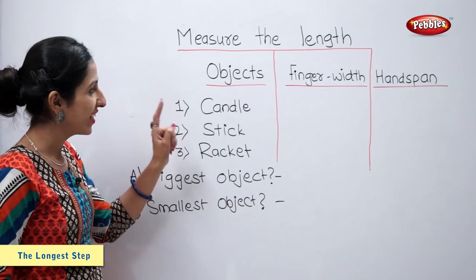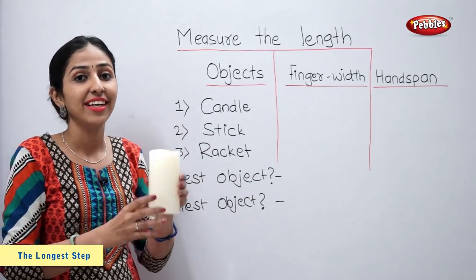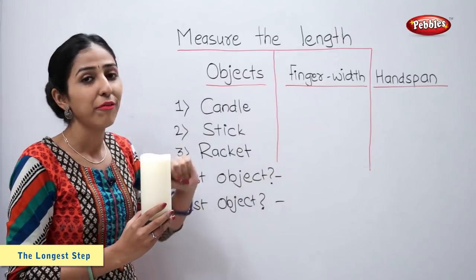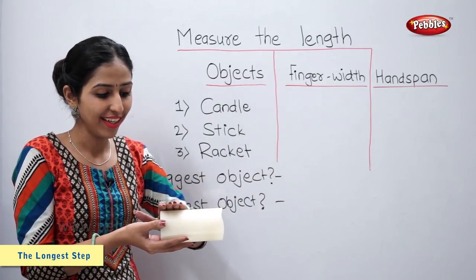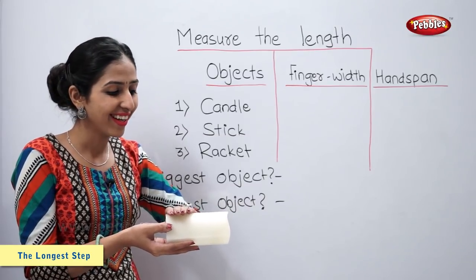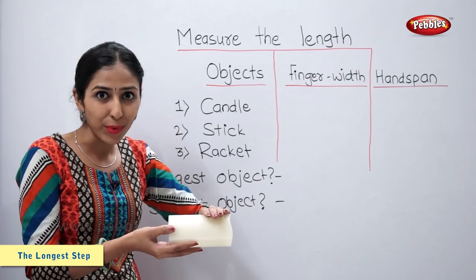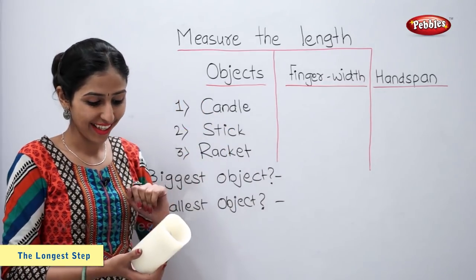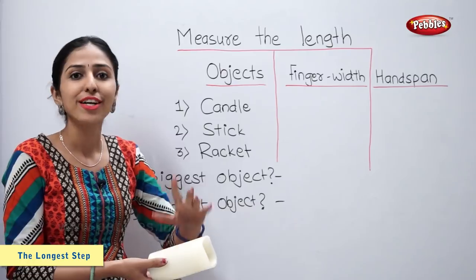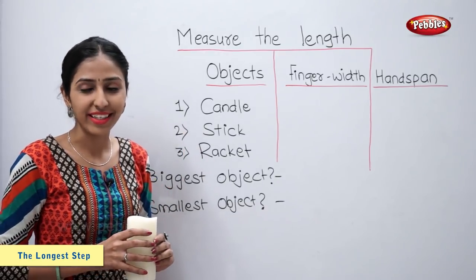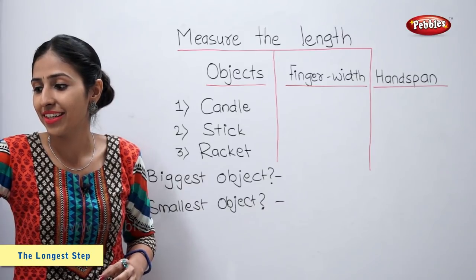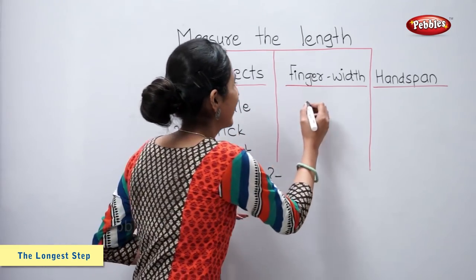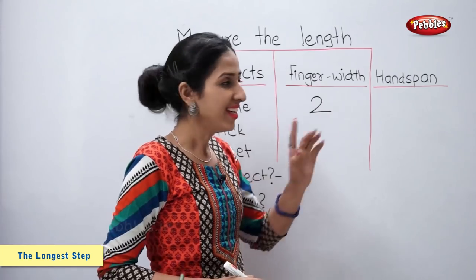First is candle. Let us measure the length of this candle using finger width. One, two — two finger width. Now handspan. One — one handspan. So the length of this candle is two finger width, one handspan.